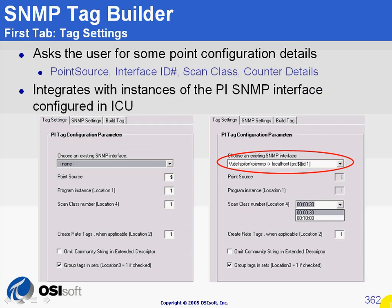The first tab is the PI side of it. This is where we ask people for details on how to configure the tags: the point source, the interface ID number, the scan class to use to query the SNMP agent, and some more details about the counters.